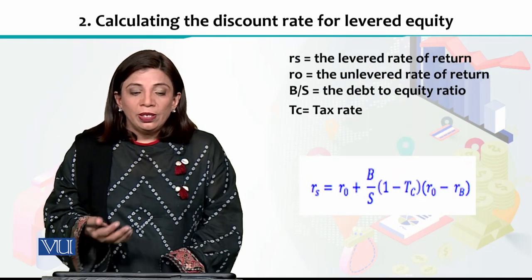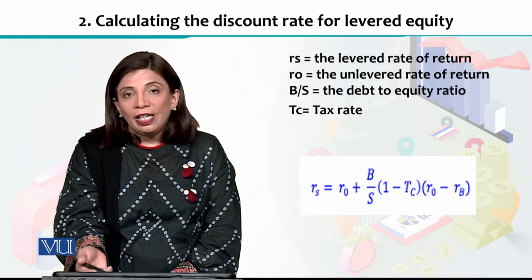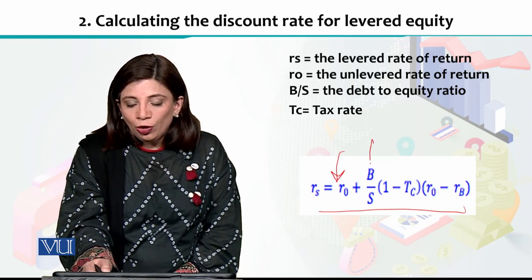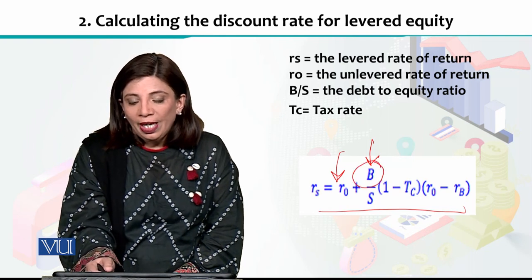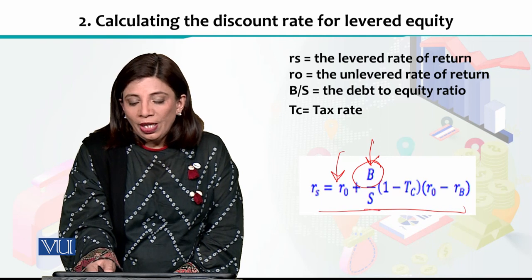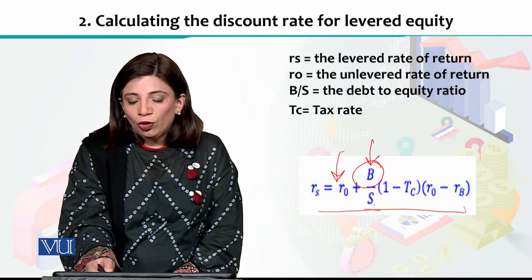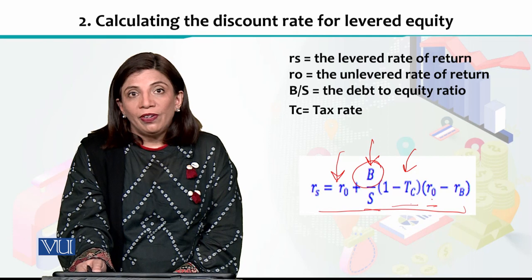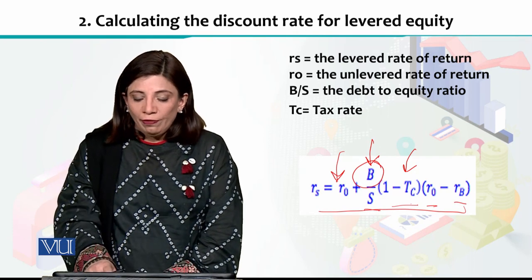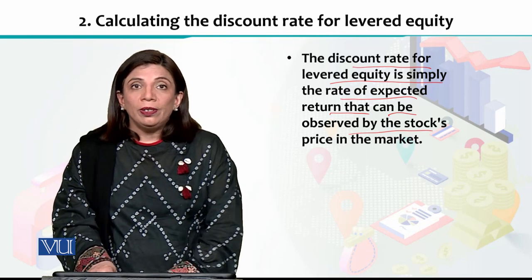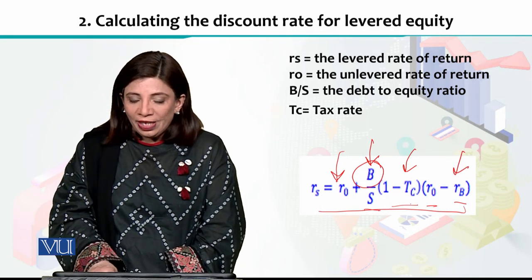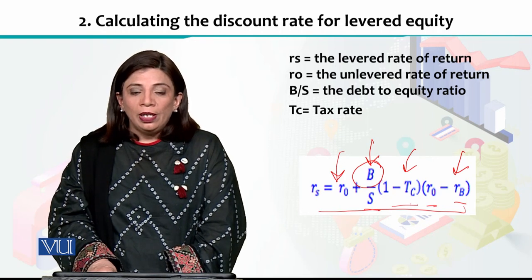Now you have the levered cash flow and the discount rate. For the discount rate of levered equity, we look at a particular formula. You need the levered rate of return R_S. Capital B is the debt financing amount, capital S is equity, so B over S is the debt-to-equity ratio. You multiply this by (1 - TC), where TC is the tax rate. R_0 is the unlevered rate of return and R_B is the rate of return on the debt financing. Plugging all these values into the formula gives you the discount rate for levered equity.